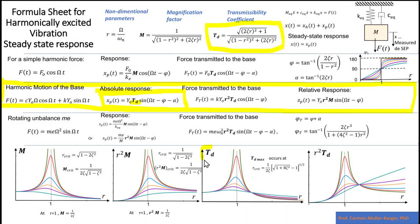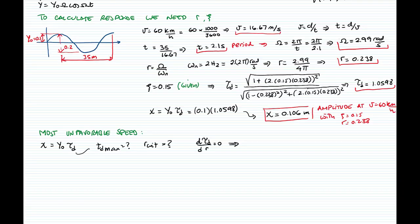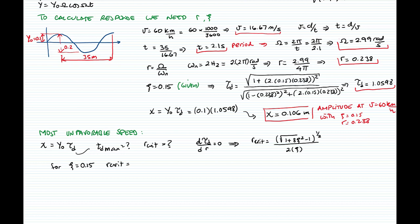Here we are getting the maximum transmissibility coefficient, and the critical value for r has this expression. The critical r equals the square root of (√(1 + 8ζ²) − 1) divided by 2ζ. Plugging in ζ = 0.15, the critical value for r equals — inputting all values, the square root of (√(1 + 8(0.15)²) − 1) divided by (2 × 0.15) — the critical value for r is 0.979. That means it's very close to resonance, because resonance occurs at r = 1.